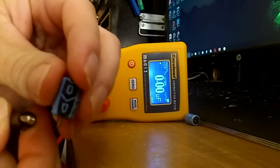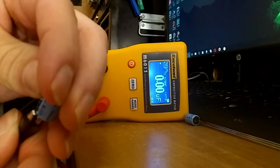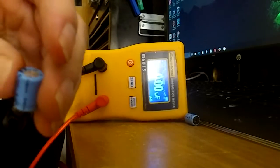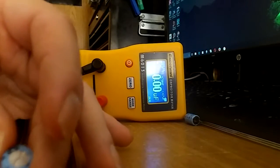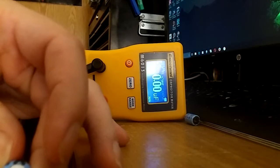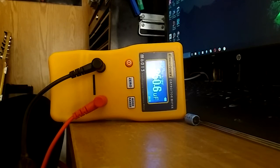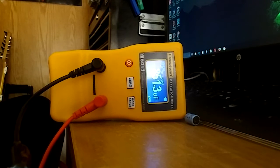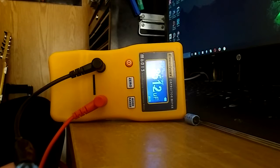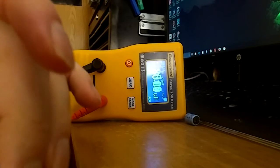So you're going to put the black lead on the negative. Now remember this is a 1000 microfarad capacitor, watch the screen. That's for a 1000 microfarad, it's reading about 851-ish. It fluctuates around there. So this one's weak.